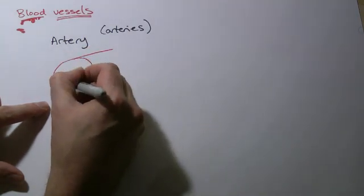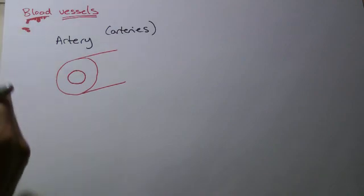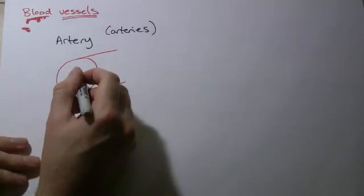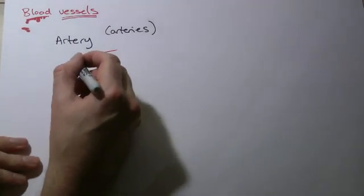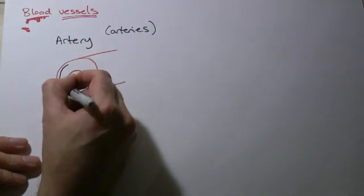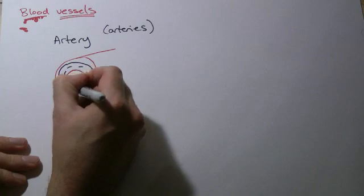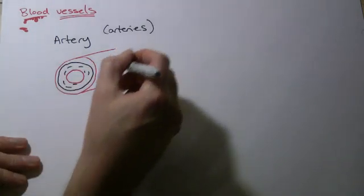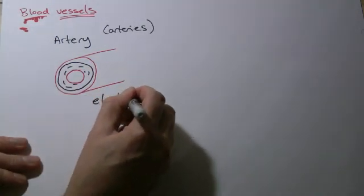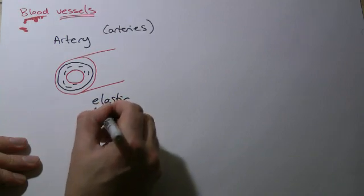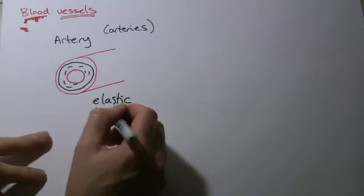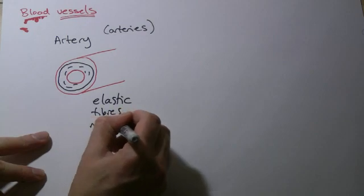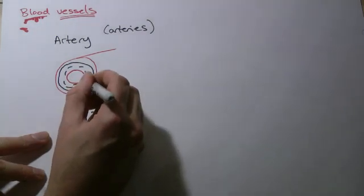We'll see how that links in a second to veins. So what you have in an artery is a nice thick layer of what we call elastic fibers and muscle. Elastic as in nice and stretchy, elastic fibers and muscle.